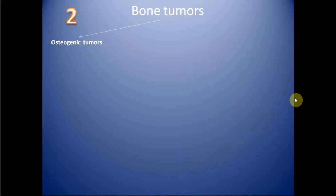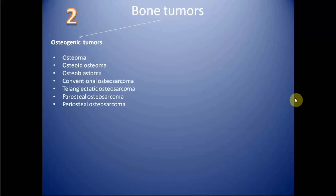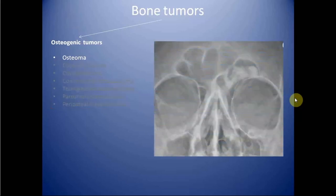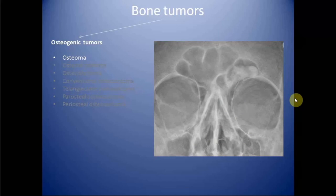The next category includes osteogenic tumors, which are characterized by formation of osteoid matrix. Osteogenic tumors include osteoma, osteoid osteoma, osteoblastoma, conventional osteosarcoma, telangiectatic osteosarcoma, parosteal osteosarcoma, and periosteal osteosarcoma. Except for the osteosarcomas, the rest are benign. Osteomas are benign mature bony growths which are exclusively seen in membranous bones like the skull and paranasal sinuses. Here we can see a well-defined osteoma in the left frontal sinus, which can cause blockage of the draining sinus and lead to formation of mucocele.